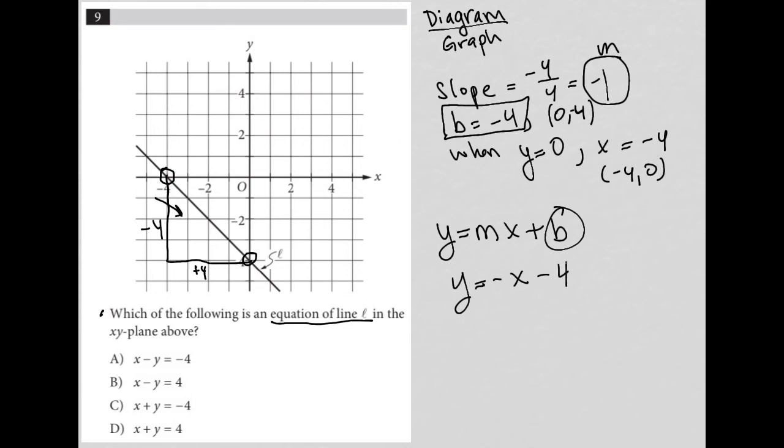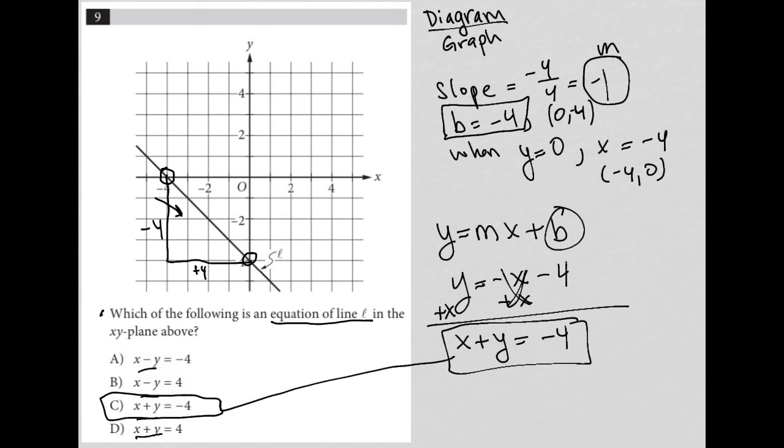Now when I look at the answer choices, all of my answer choices have x and y together on the left side. So I want to do the same thing by adding x to both sides of this equation, removing it from the right hand side. So now on the left hand side, I'd have x plus y equals negative 4. And the answer that matches that equation looks like it's going to be choice C. So choice C is the correct answer.